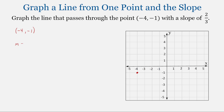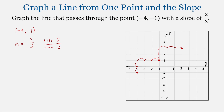We also know the slope. We have a slope equal to 2 thirds, so that means we're going to rise — go up 2 — and run — go to the right — 3. From this point, we're going to rise 2 and then run 3. Here is our second point. Now let's do this again: rise 2 and run 3. Here is the third point. Then we can connect those points. We get the line that passes through the point negative 4, negative 1, with a slope of 2 thirds.